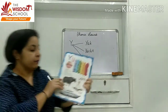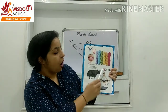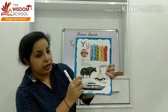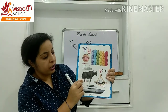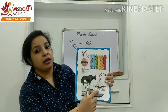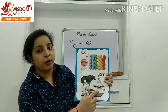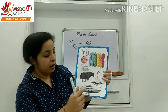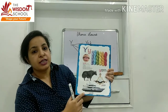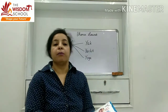Now look at the picture. This is the picture for Y. Who is doing yoga in the picture? She does yoga. And this is a picture of a yacht. Clear?